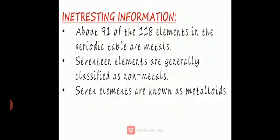An interesting fact: 91 of the 118 elements in the periodic table are metals, 17 elements are generally classified as non-metals, and 7 elements are known as metalloids. Metalloids are elements that contain properties of both metals and non-metals. They are in an intermediate condition and are neither classified as metals nor as non-metals.